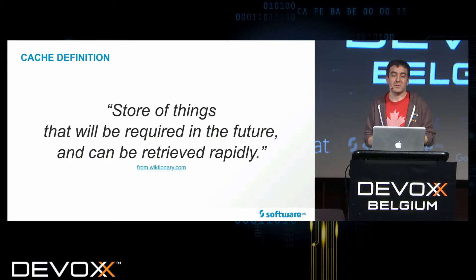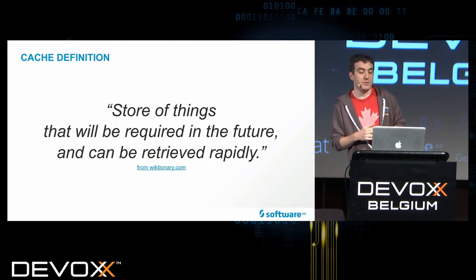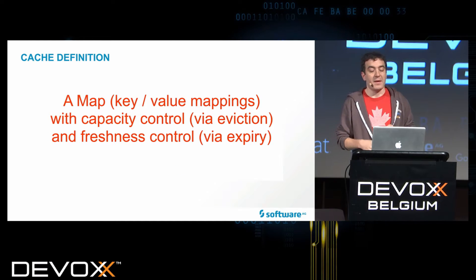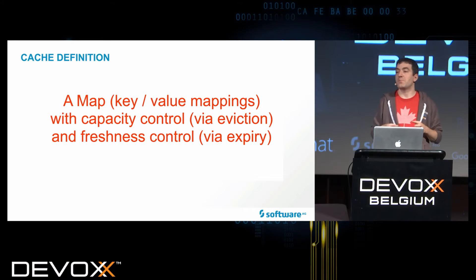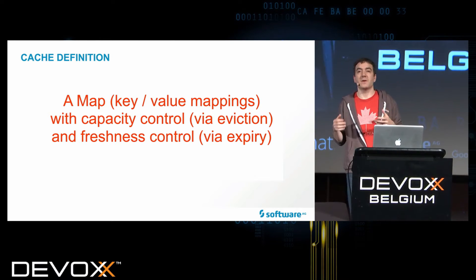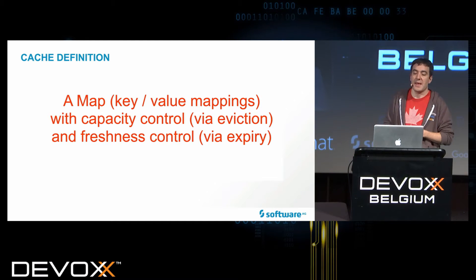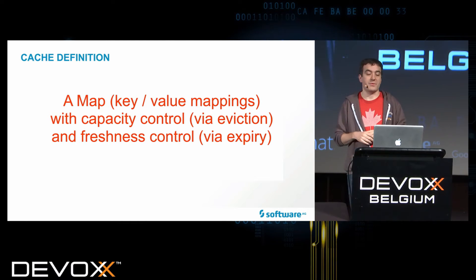So, what's a cache? According to Wiktionary.com, a cache is a store of things that will be required in the future and can be retrieved rapidly. If you ask a Terracotta engineer, they will answer that a cache is like a map — or even a temporary map — in the Java sense: key-value mappings with capacity control via eviction and freshness control via expiry. Those are the two most important features of a cache.